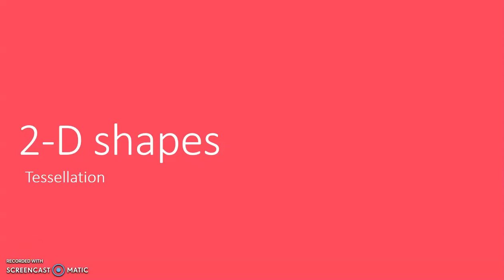Hello children, in today's class we are going to learn about tessellation. Tessellation, or tiling — what does tessellation mean? Tessellation is the covering of a flat surface using one or more geometric shapes. So you see that the flat surface will be filled.